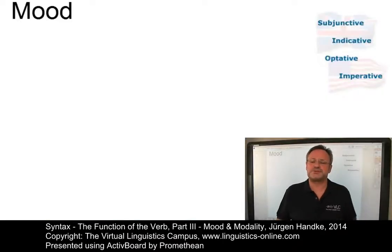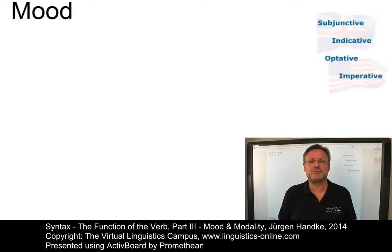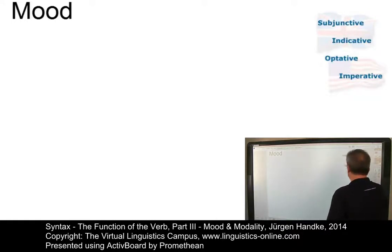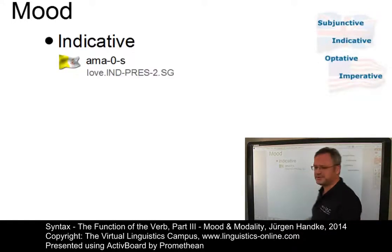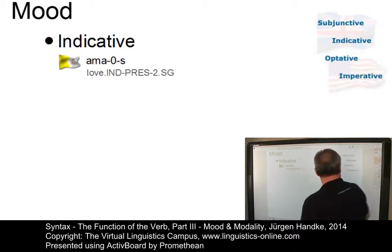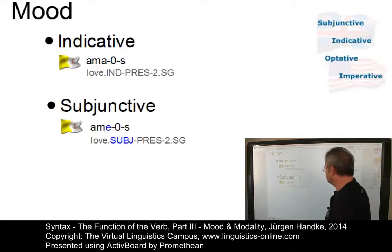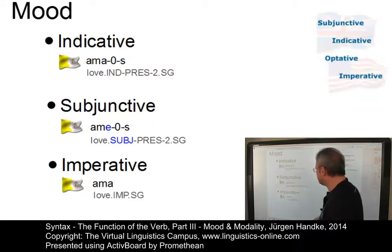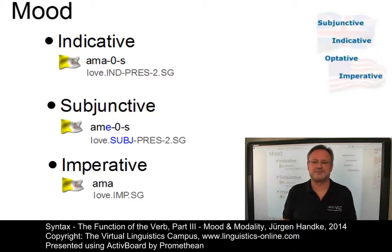The term mood is traditionally restricted to a category expressed in verbal morphology. In Latin, for example, we have three moods: the indicative mood — 'amas', you love; the subjunctive mood — 'ames', you may love; and the imperative mood — 'ama', love.